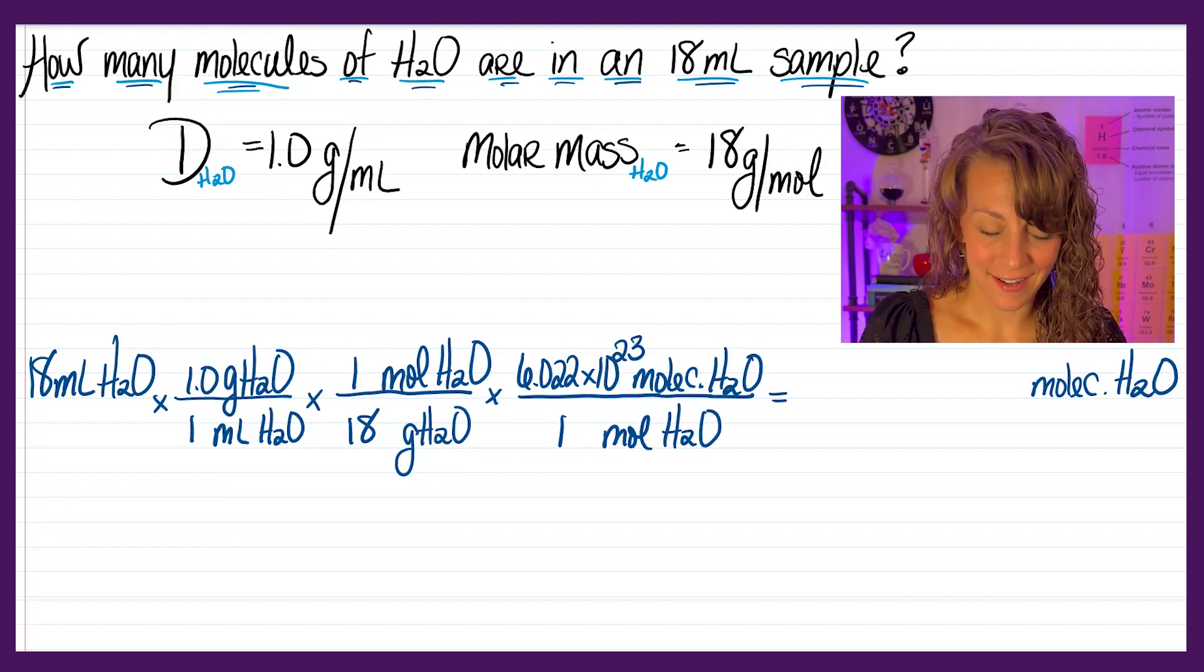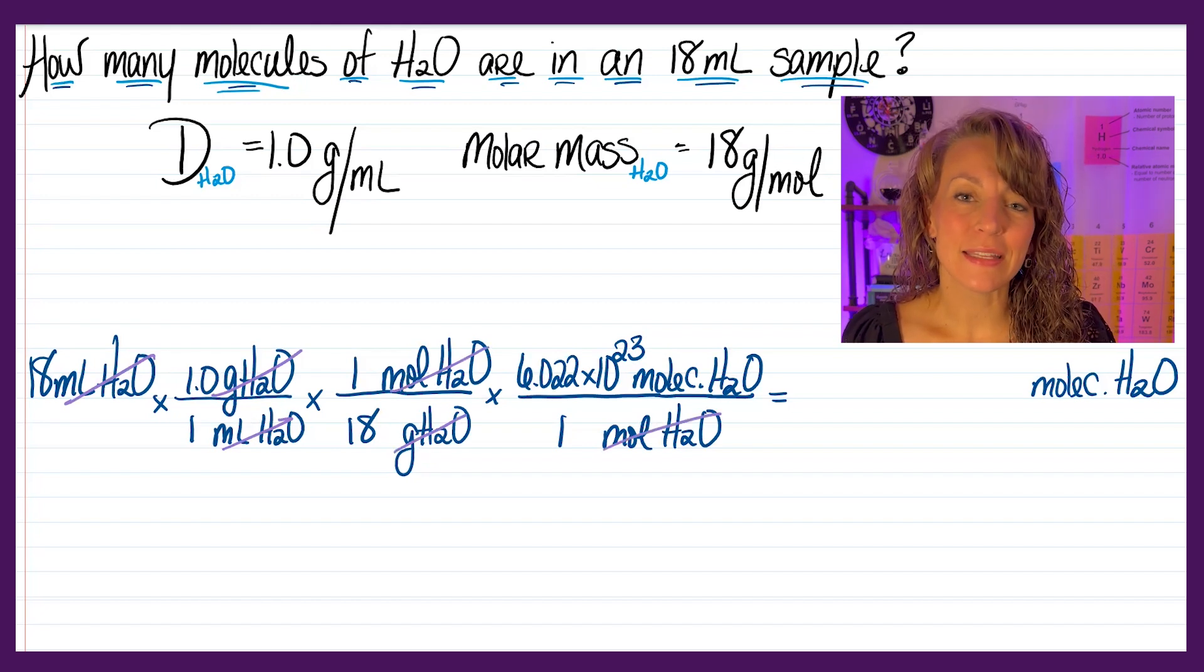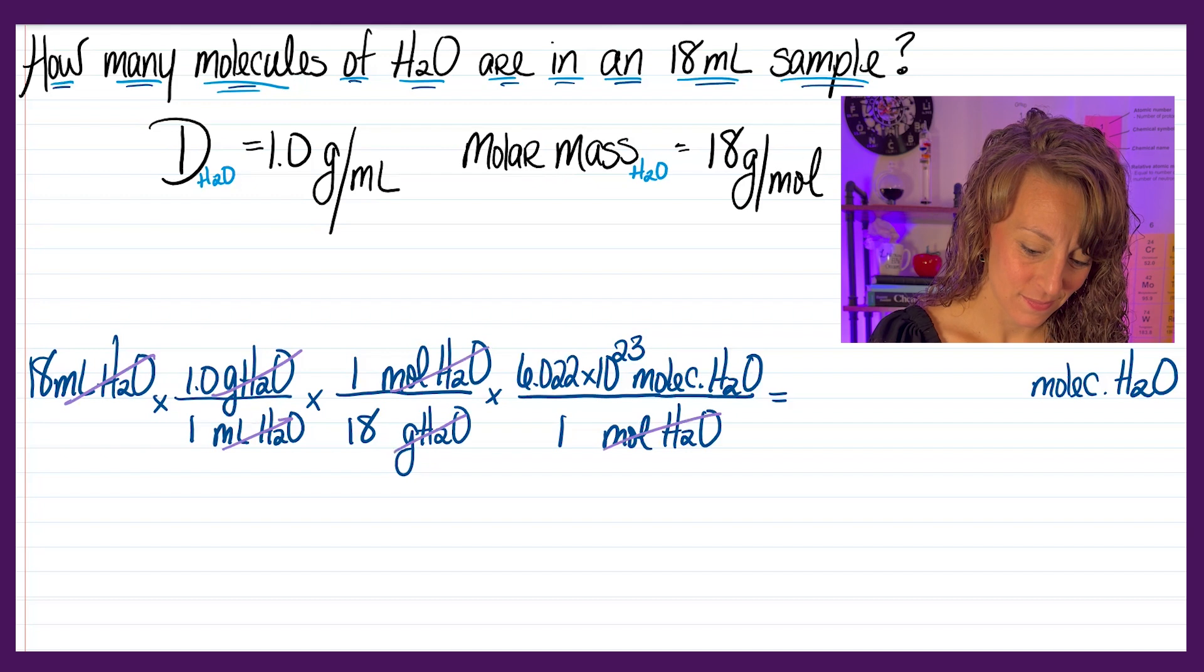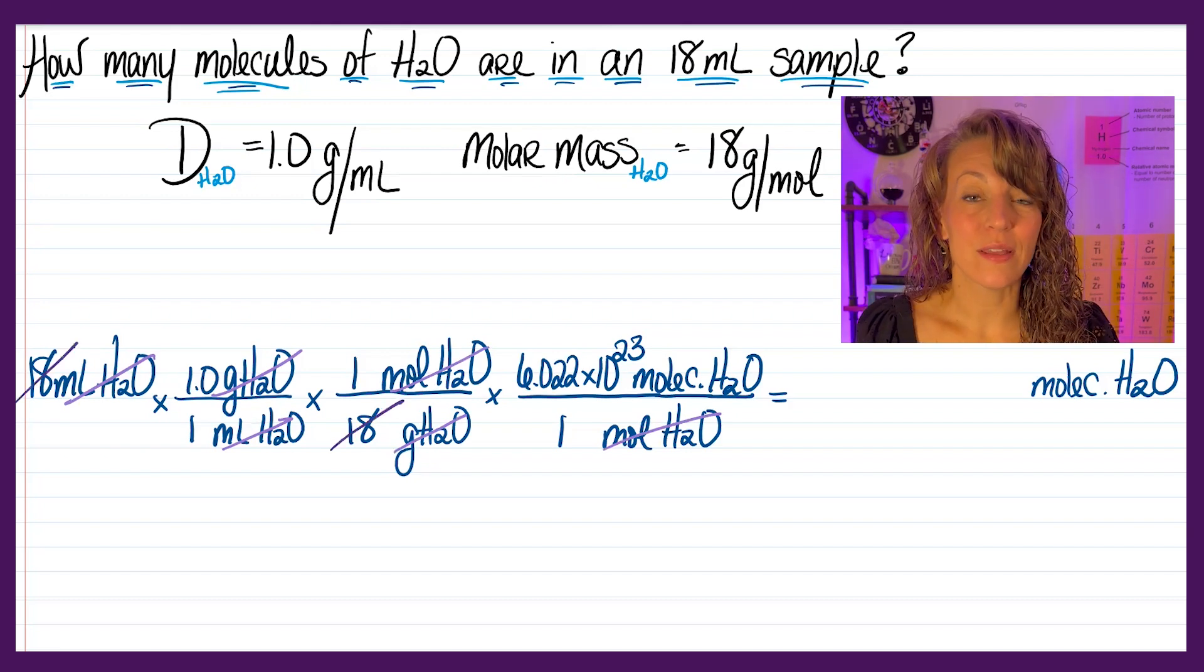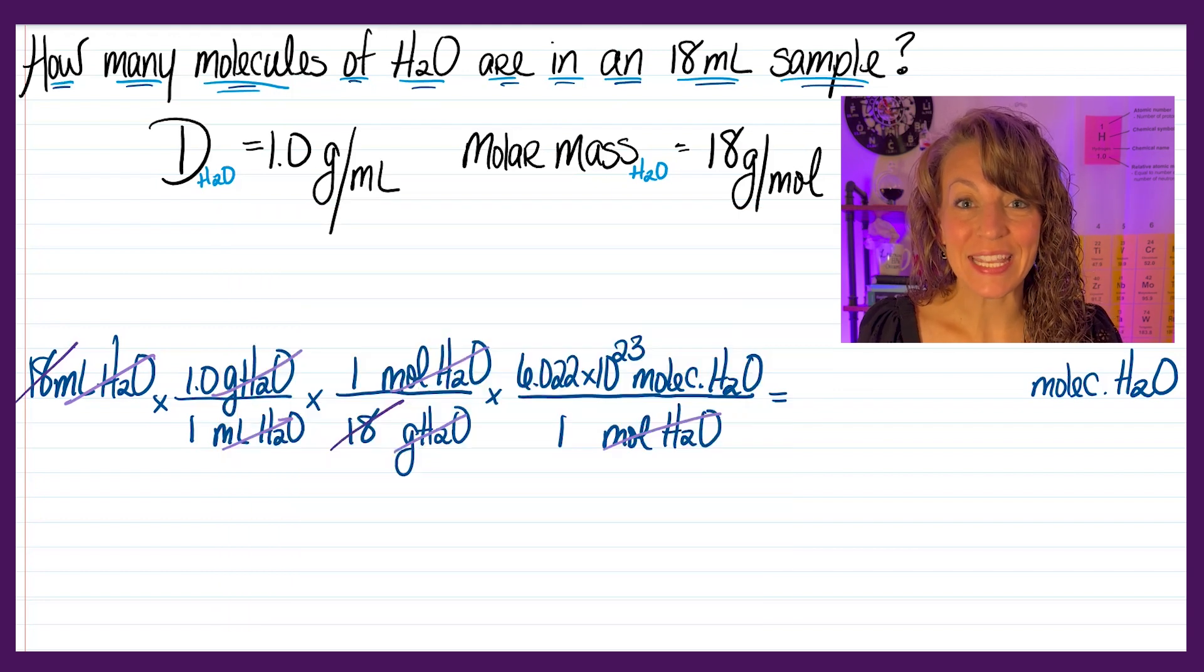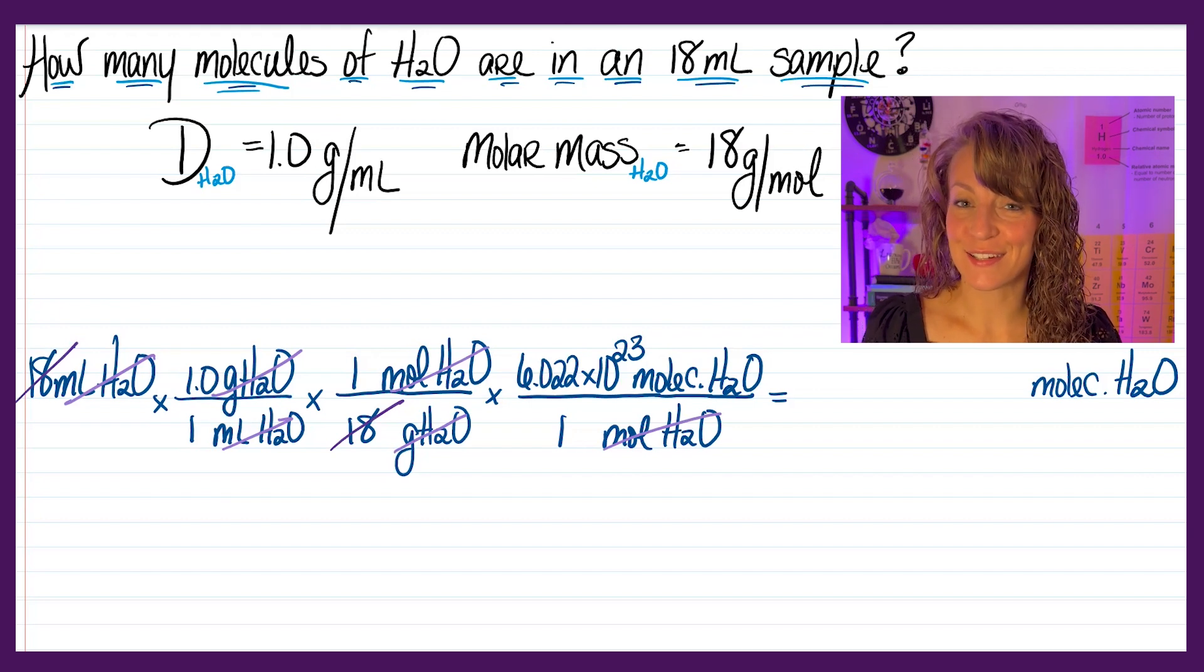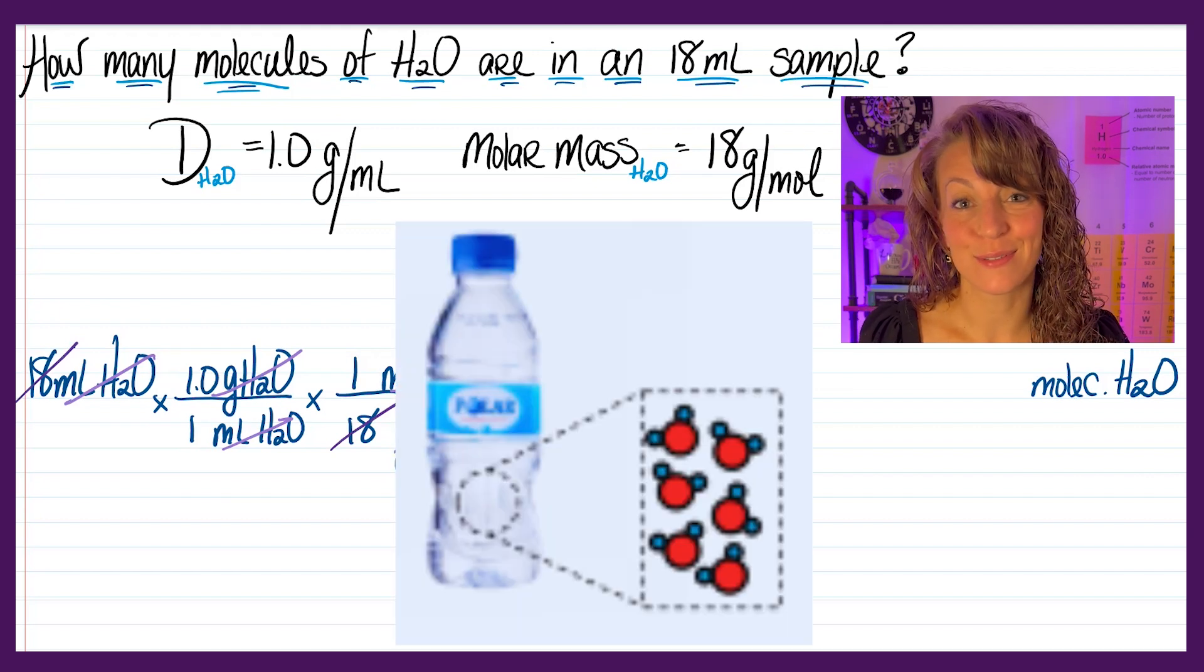Now my units here are going to cancel all the way up to molecules. Not only that, but since I'm going to take those 18 milliliters, multiply it by 1, and then divide by 18, the 18s cancel too. So essentially, I have 1 times 6.022 times 10 to the 23rd, which means in that 18 milliliter sample, I have 6.022 times 10 to the 23rd individual molecules of water.